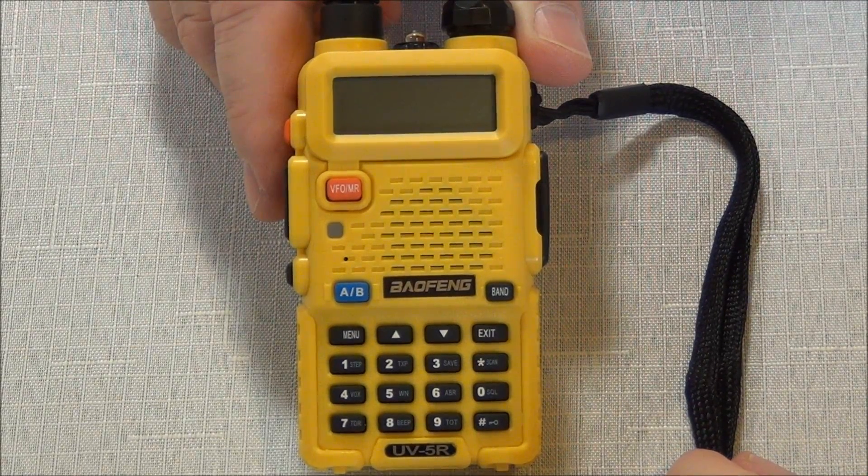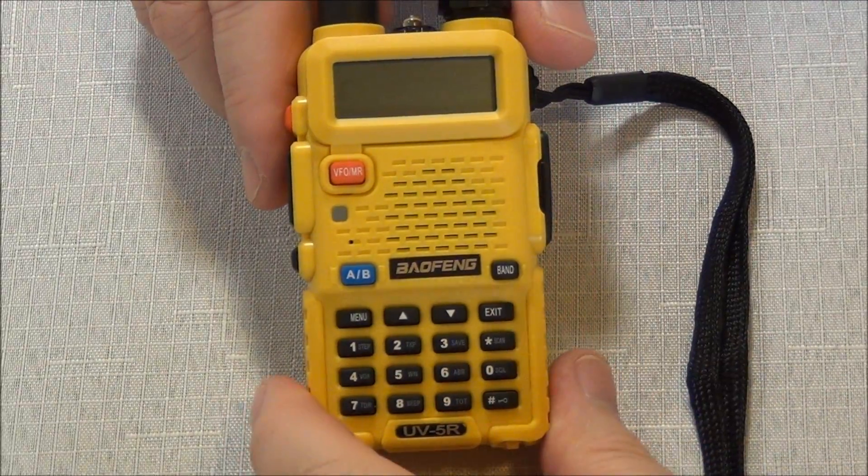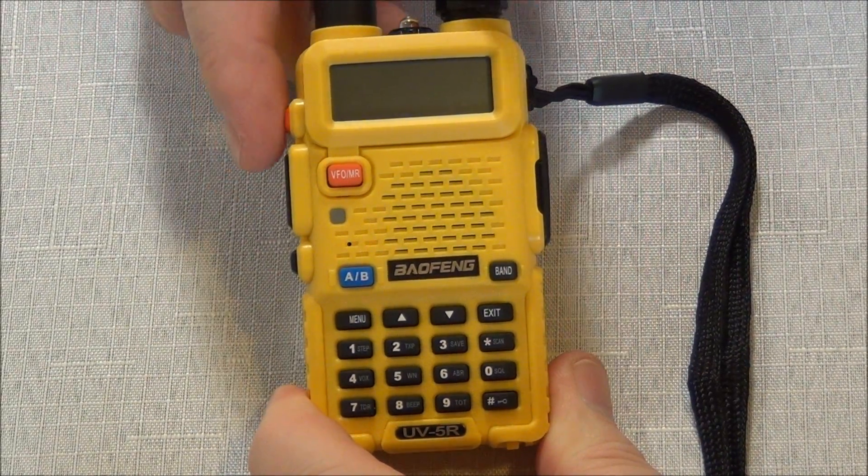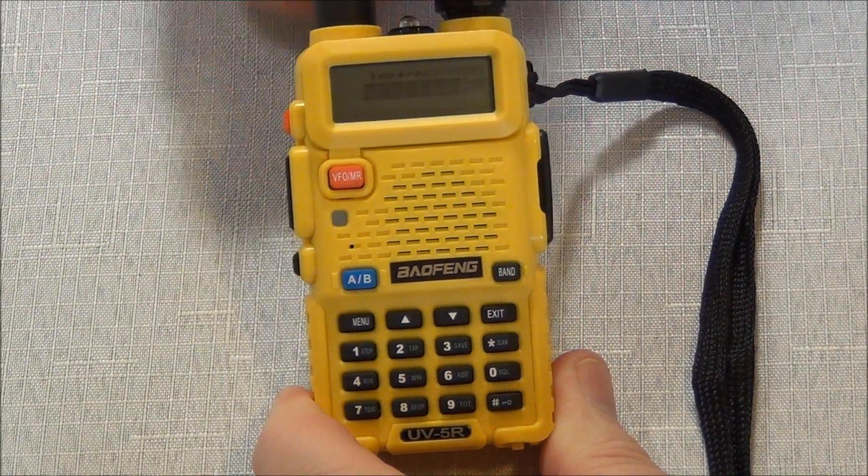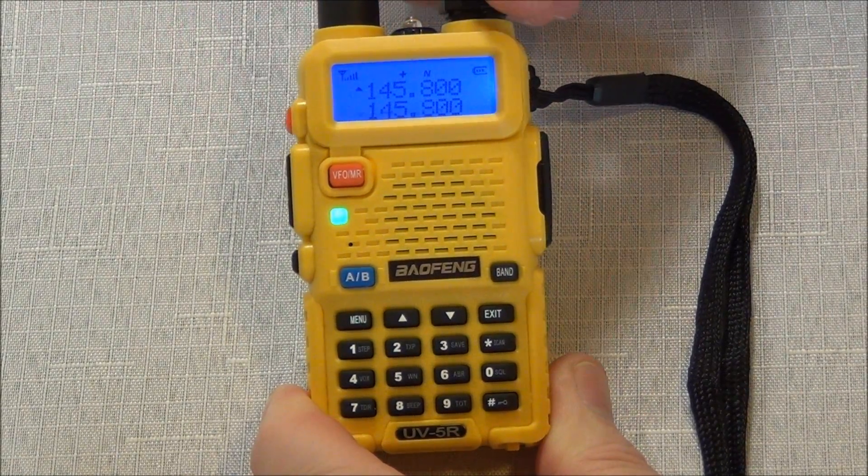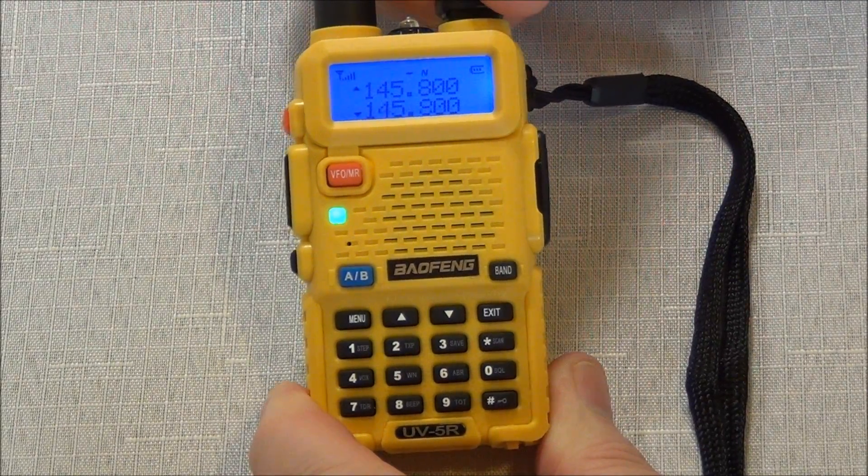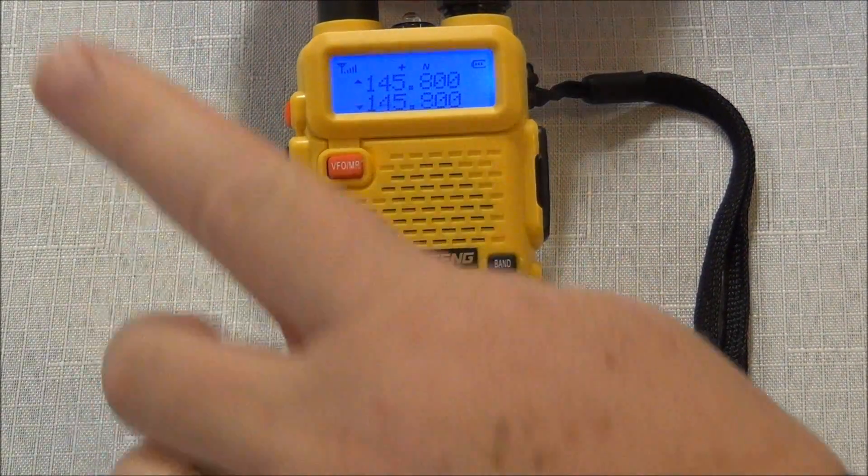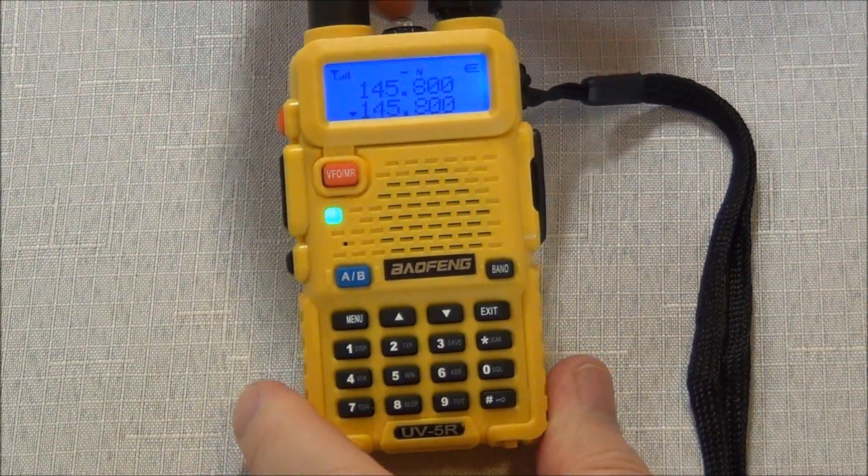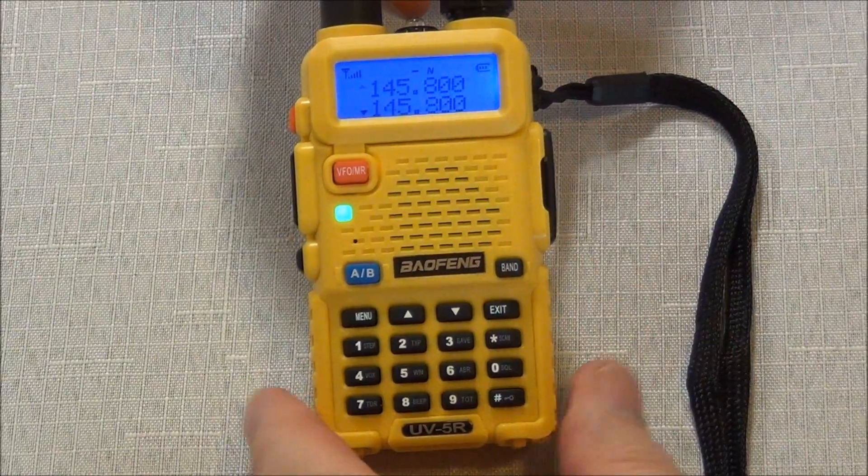Right now I'm going to show you how to program a repeater into the Baofeng UV5R. It's pretty straightforward. Let me turn this on here. You can see we're getting some background noise. A lot of this background noise is simply from all of the fluorescent lights I have around here to give you some good video. So I'm just going to leave that turned down for now.